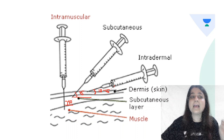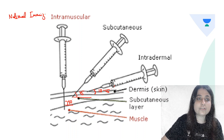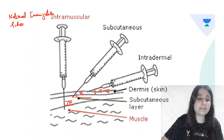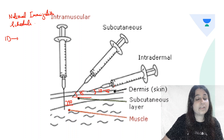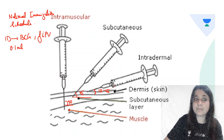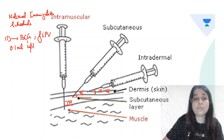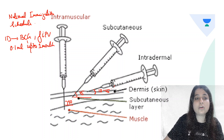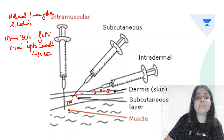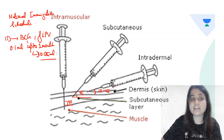Under the National Immunization Schedule, what are the vaccines given by the intradermal route? Intradermal route — you can give it in the left arm. BCG up to 1 month is given in the dose of 0.05 ml intradermally. If you give more than 0.05 ml, it will lead to suppurative lymphadenitis.